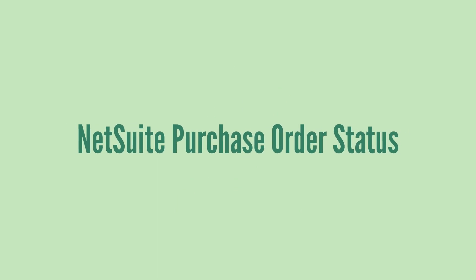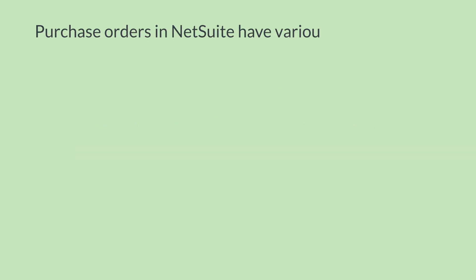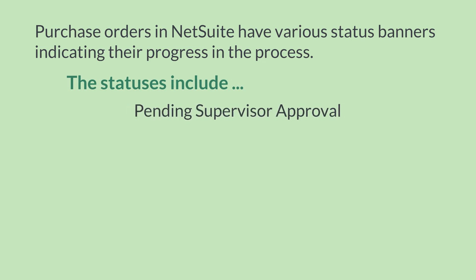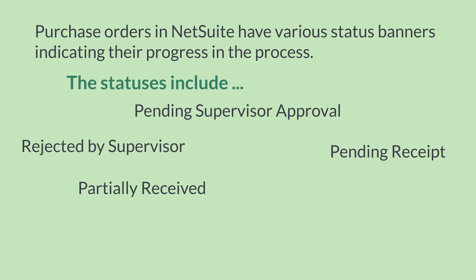NetSuite provides several tools to help you manage your purchase orders. First, there's the purchase order status. Purchase orders will display a status banner that informs you where the PO is in the process. When Advanced Receiving is not turned on, the PO statuses include Pending Supervisor Approval, Rejected by Supervisor, Pending Receipt, Partially Received, Received, and Closed. You'll also be able to see statuses on the list of purchase orders, which allows you to filter by status.